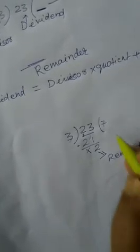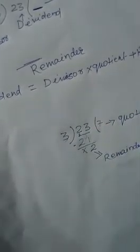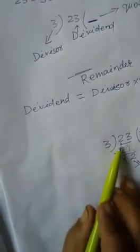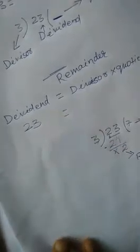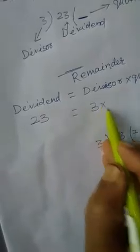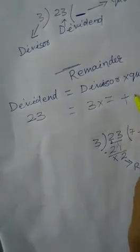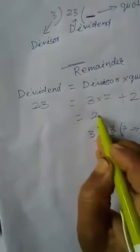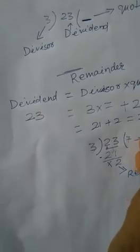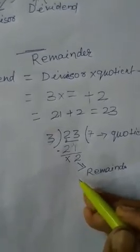So the remainder is 2 and the quotient is 7. This division proves the rule. Dividend equals 23, divisor equals 3, quotient equals 7, and remainder equals 2. Because LHS equals RHS: 3 sevens are 21, plus 2 equals 23, which is exactly equal to the dividend. That means whatever division we performed here is most accurate.